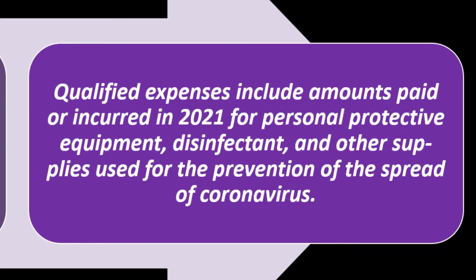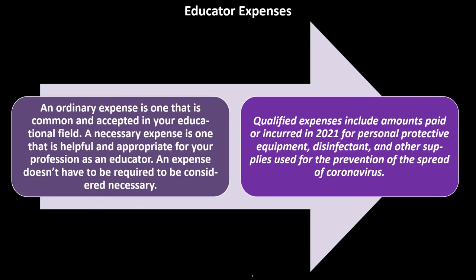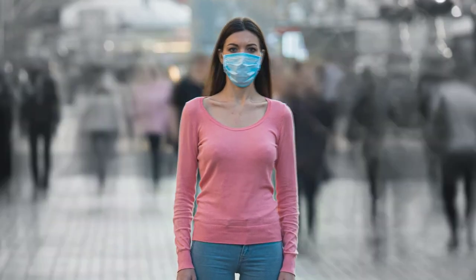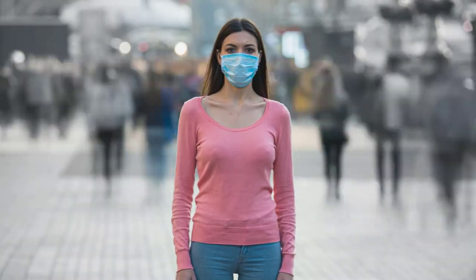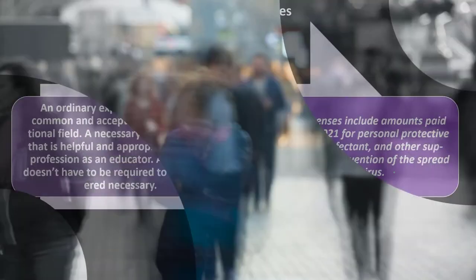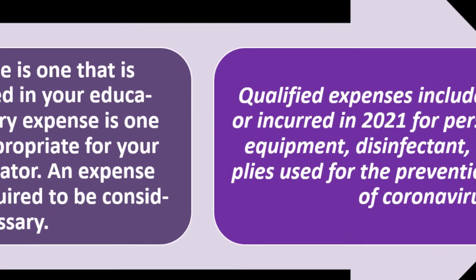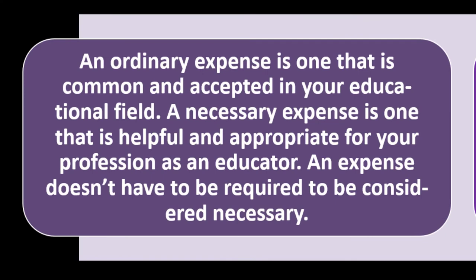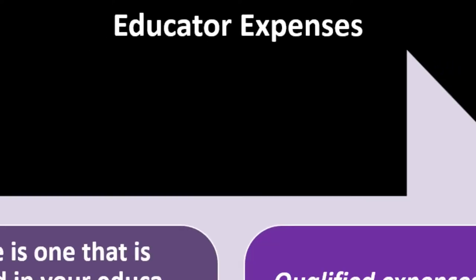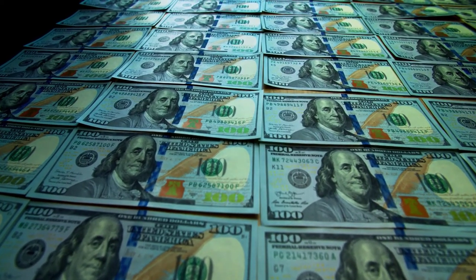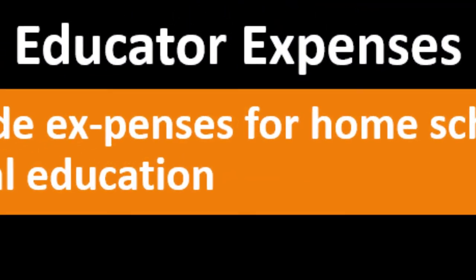Qualified expenses also include amounts paid in 2021 for personal protective equipment, disinfectant, and other supplies used for the prevention of the spread of coronavirus. This was added during the pandemic, but the point is somewhat ironic — educators were already most likely spending over $250 and already hitting the cap, so adding a few dollars for disinfectant wasn't really changing anything meaningful for most of them.